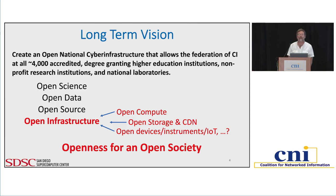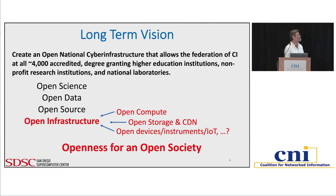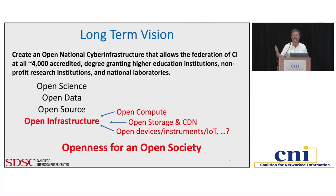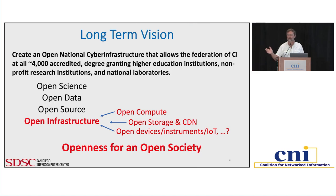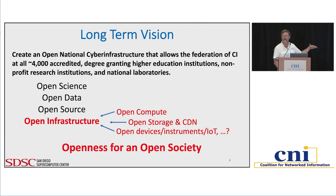This is, in essence, the vision I want to present — everything else in this talk is just detail. My long-term vision is to create an open national cyber infrastructure that allows the federation of CI across all 4,000 accredited degree-granting higher education institutions, non-profit research institutions, and national laboratories. The main mental model is that anybody who engages in open science should have the ability to federate their resources — compute, storage, and all of cyber infrastructure — into a national federation. I look at this as the necessary fourth leg in addition to open science, open data, and open source: open infrastructure.